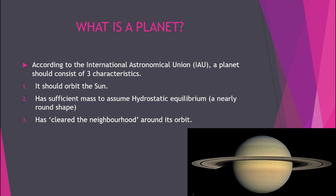According to the International Astronomical Union, or IAU, located in France, a planet should consist of three categories. The first one is it should orbit the sun. The second one is it should have sufficient mass to assume hydrostatic equilibrium, meaning a nearly round shape.